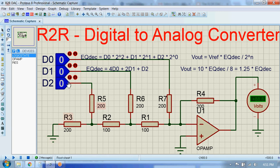Now when D0, D1, and D2 all bits are 0, then this decimal equivalent will be 4*0 + 2*0 + 0, which is 0. The corresponding output voltage will be 1.25 times 0, so this voltmeter should display 0 volts.